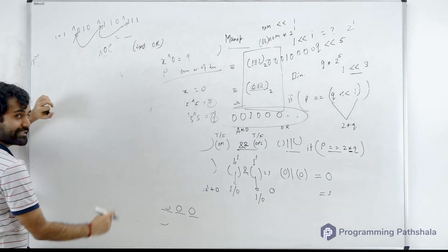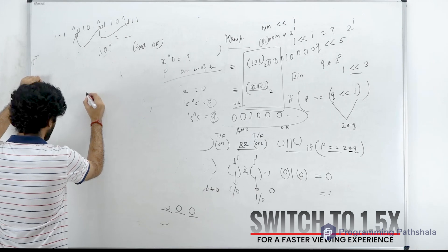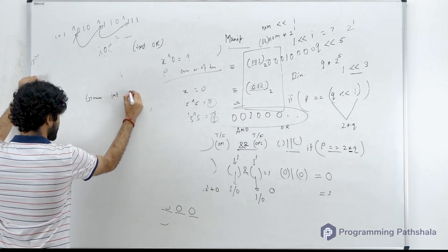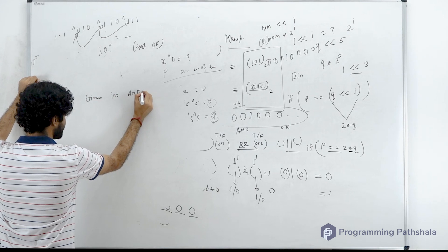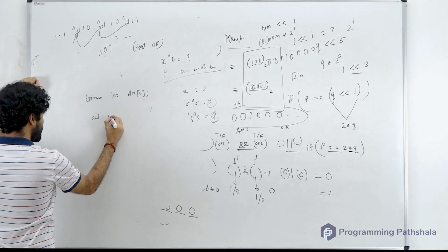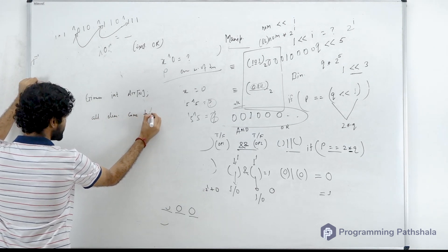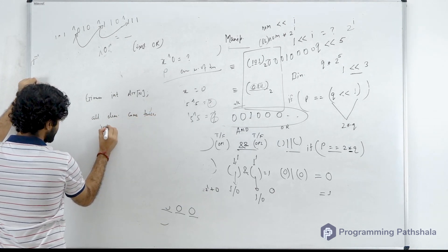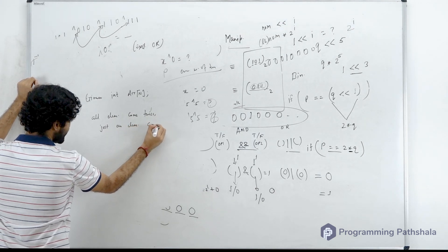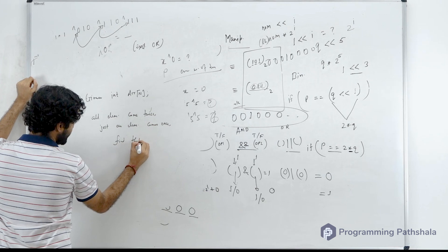So this is a very simple question and this question is a lot polluted actually. So you are given an integer array. Now it says that all elements come twice, just one element comes once. Find that one element.